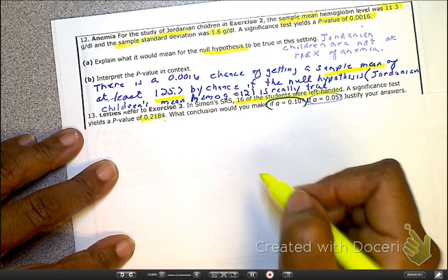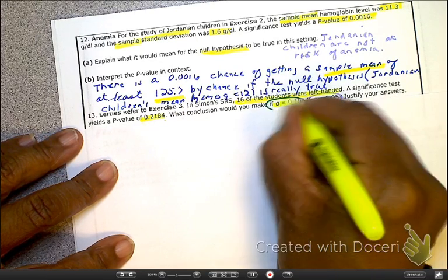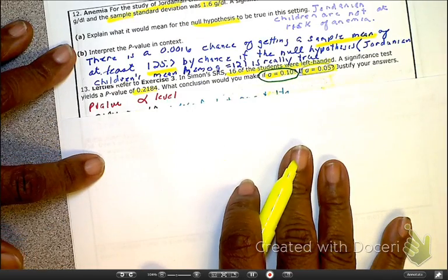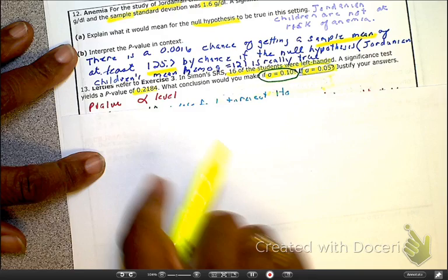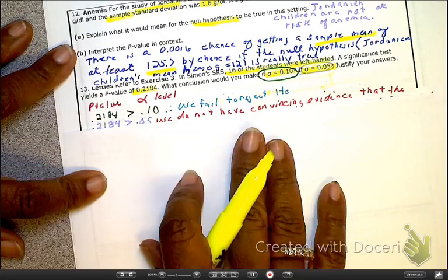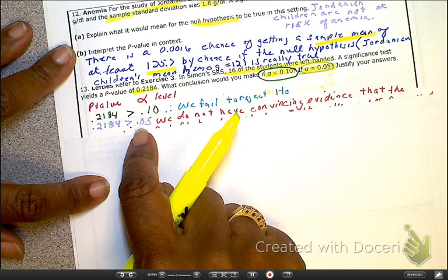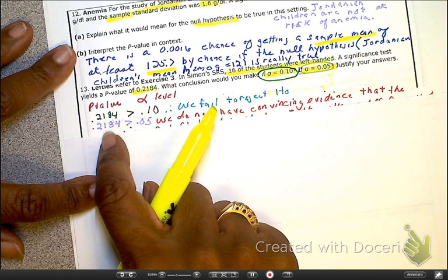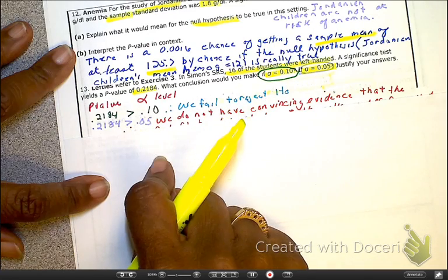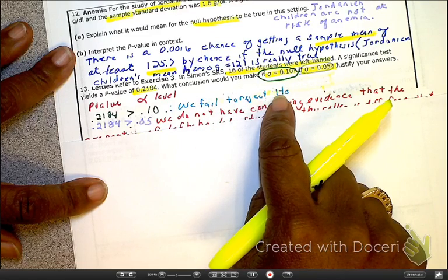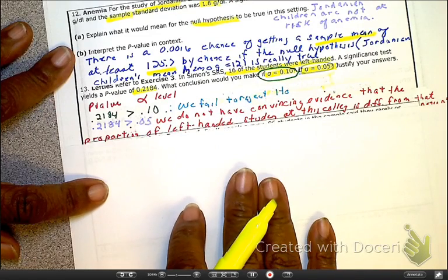What conclusion can we meet at an alpha level of 10% and then an alpha level of 0.05? So in both cases, as we look at your p versus your alpha, in both cases it is greater than, your p-value is greater than your alpha. So in both cases, we're going to fail to reject the null hypothesis. So with that being said, what does that mean?